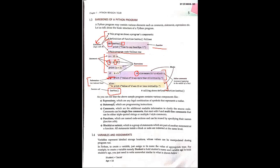Variables and assignments: a variable represents a labeled storage location. Labeled storage location means we are labeling the name and assigning that location a value which is accommodated in that variable. For example, 16 is a value which is assigned to a variable.